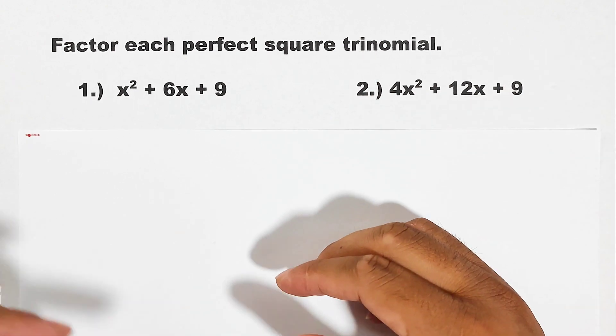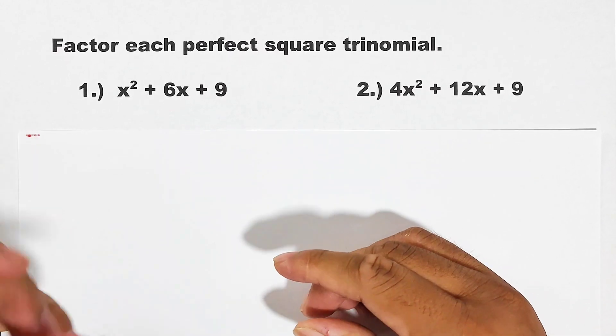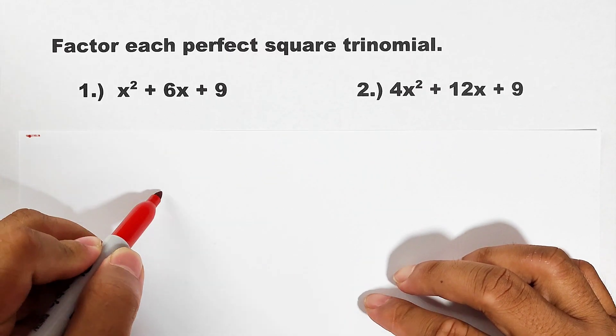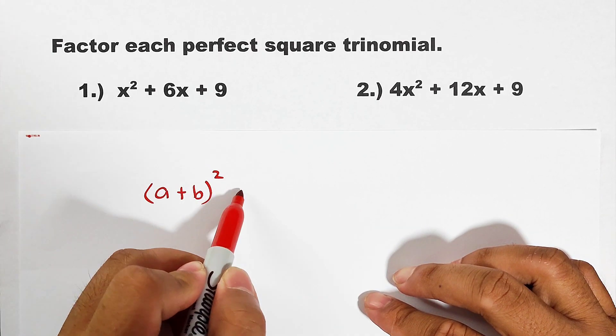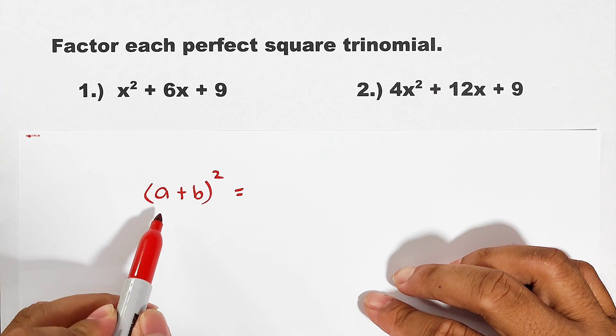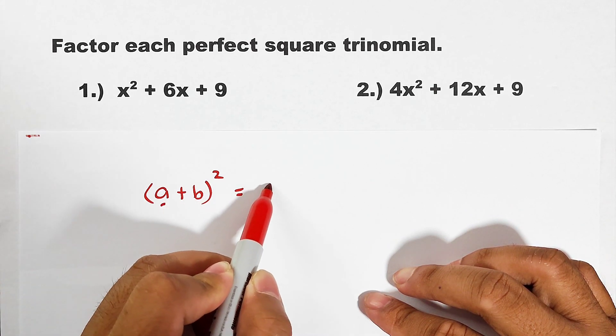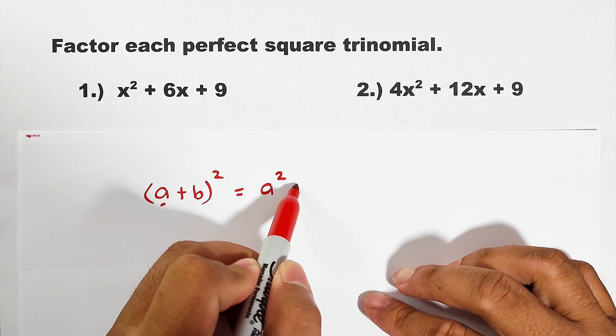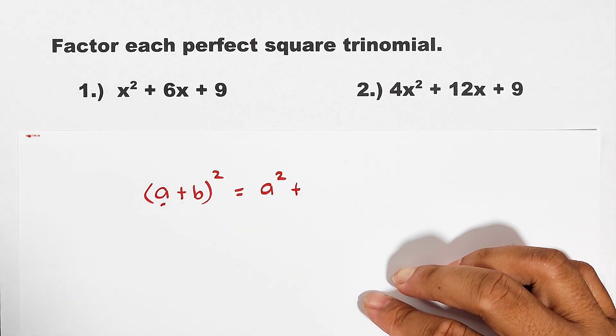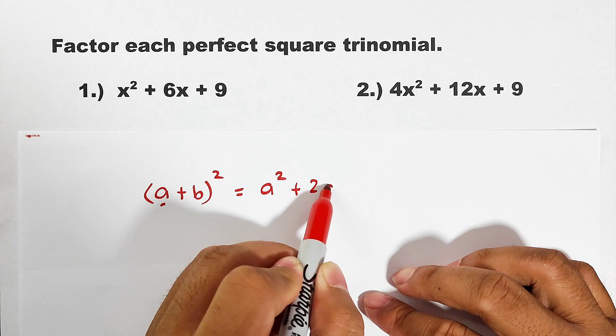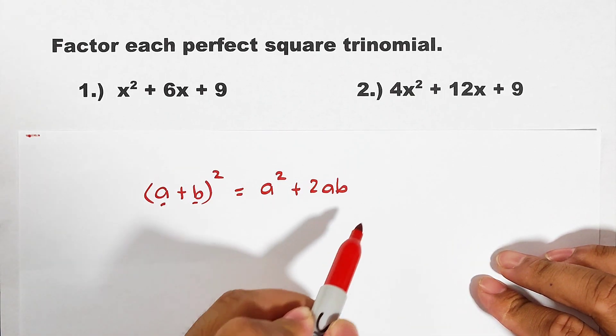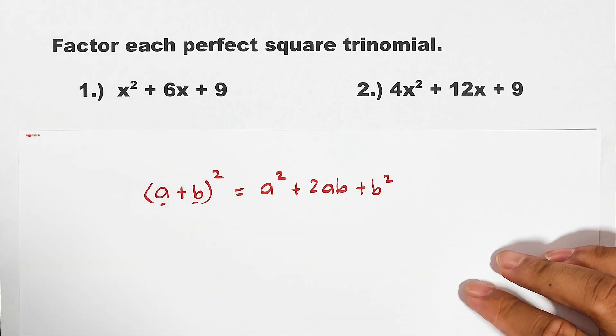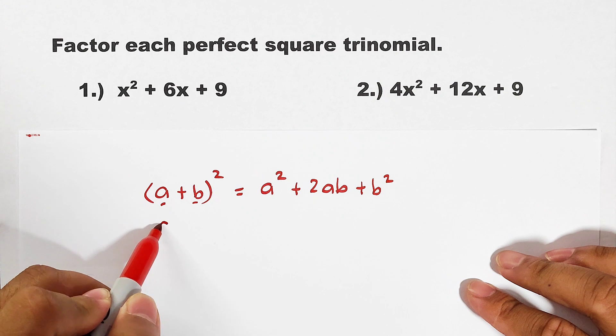A perfect square trinomial is a product of squaring a binomial. For example, we have (a + b) and we will square it. To expand this one, simply square the first term, that is a². Then copy the sign in the middle. Then multiply 2, a, and b, and that is 2ab. Lastly, square the second term, that is b².